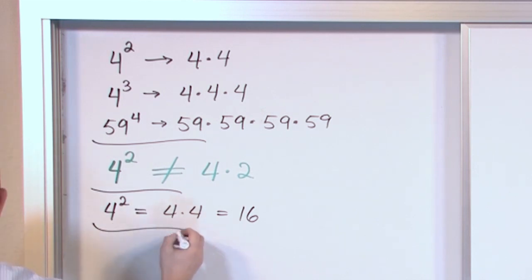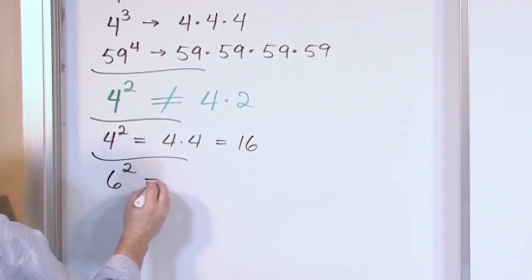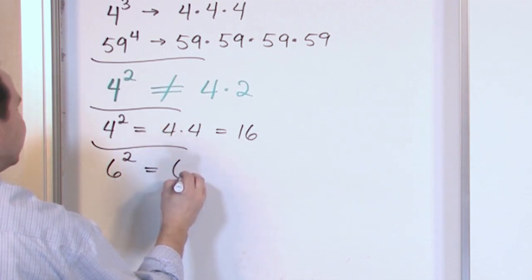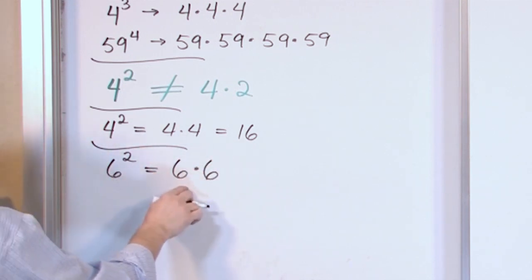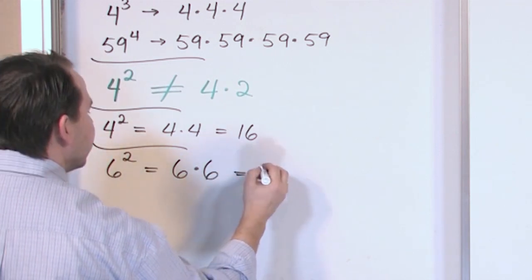Let's do another one. Let's say we have six squared. What would that be equal to? That would be six multiplied by itself two times because that's the number here. Six times six is going to give us 36.